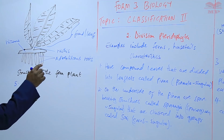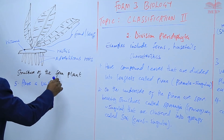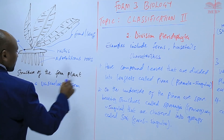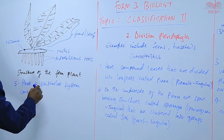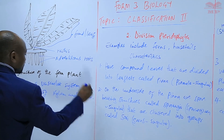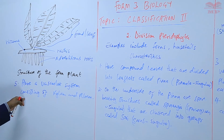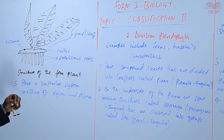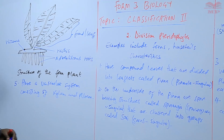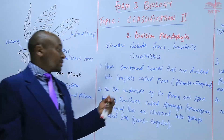Number five is that Division Pteridophyta have a vascular system consisting of xylem and phloem. That is something not found in the previous division, Bryophyta — but here we have a vascular system consisting of xylem and phloem. The mode of reproduction is also both sexual and asexual, as we have seen earlier.